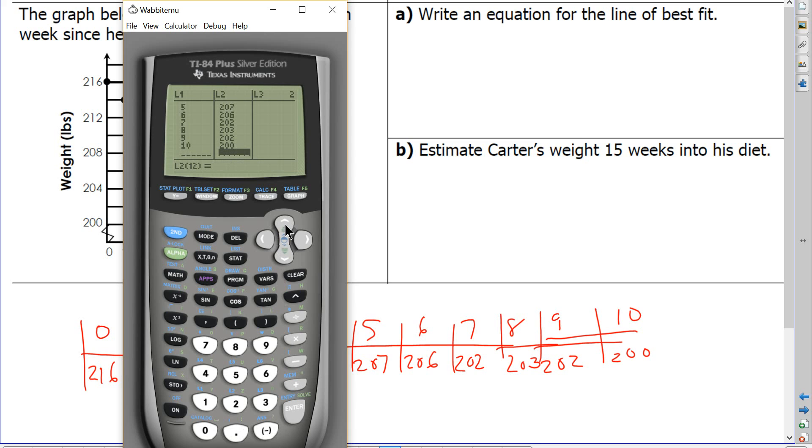Alright. So I'm going to go back and check my data here. Looks pretty good. Now I'm ready to calculate the linear regression. Press STAT. Arrow over to CALC. Choose number 4. Press ENTER five times.